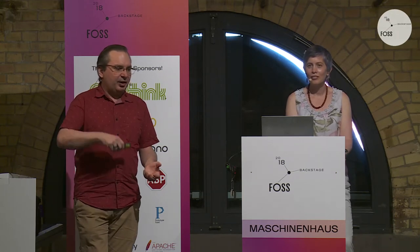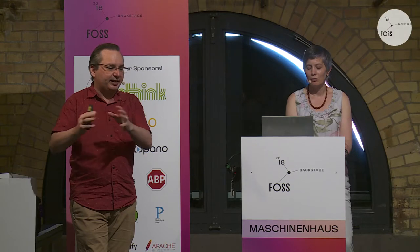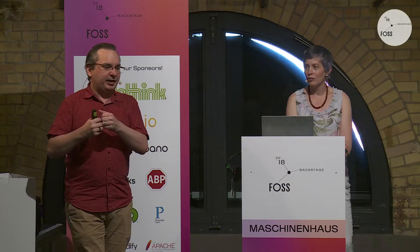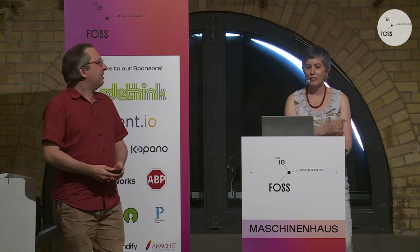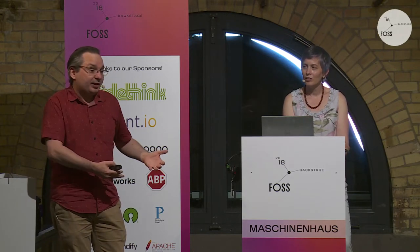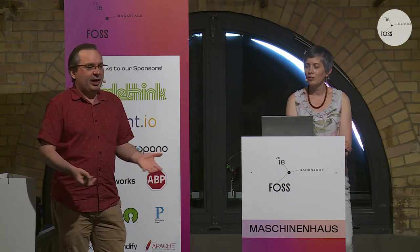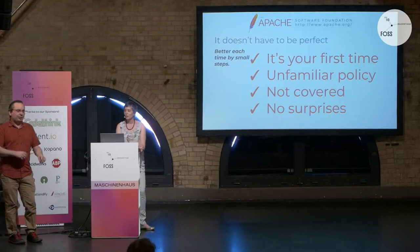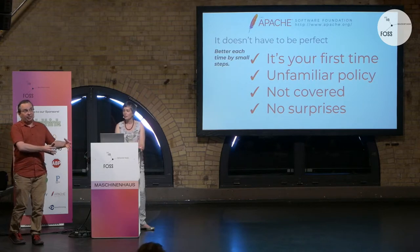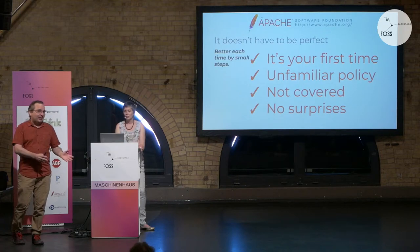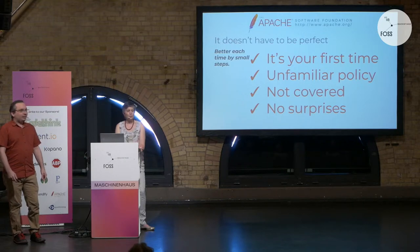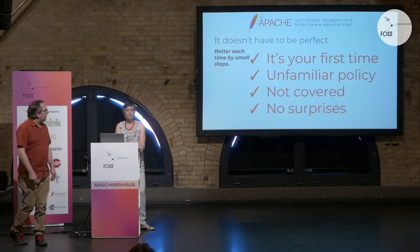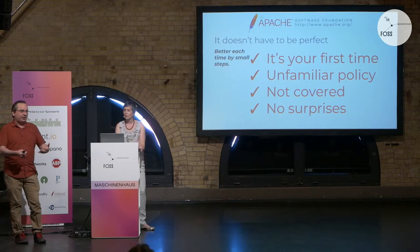I've only ever seen the very first release candidate of a podling's first release get voted plus-one by everyone just once. You may not be familiar with ASF policy at this point — you're still learning the ropes. The documentation needs improvement and some of it is scattered all over the place, so it's quite hard to work out what you should do. Also, if you look at what other top-level projects are doing and try to copy them, sometimes they're not always doing the right thing either. Basically you don't want to have any surprises in your release — so if you know there's a problem in the release, document it, and you're still more likely to get the vote to pass.